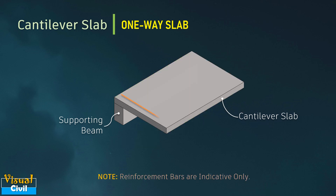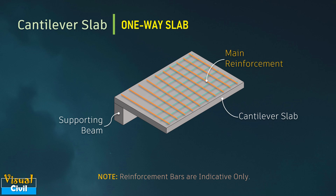As the slab bending is hogging, the main reinforcement is provided at the top along the direction of bending, while the distribution reinforcement is provided perpendicular to it.